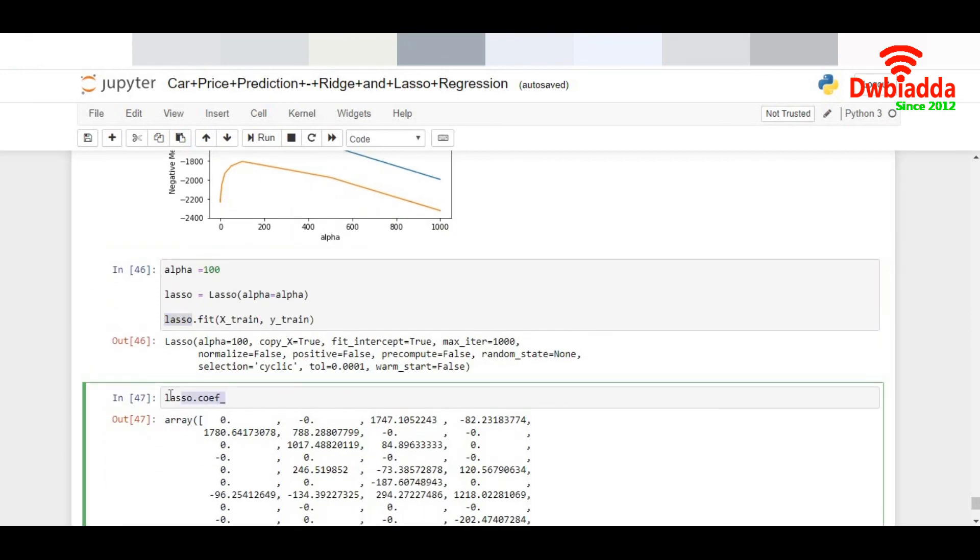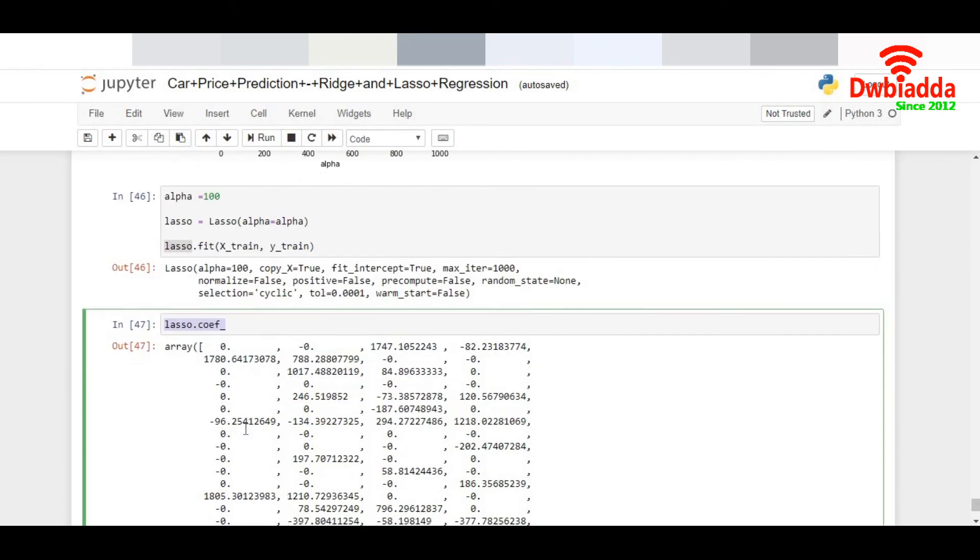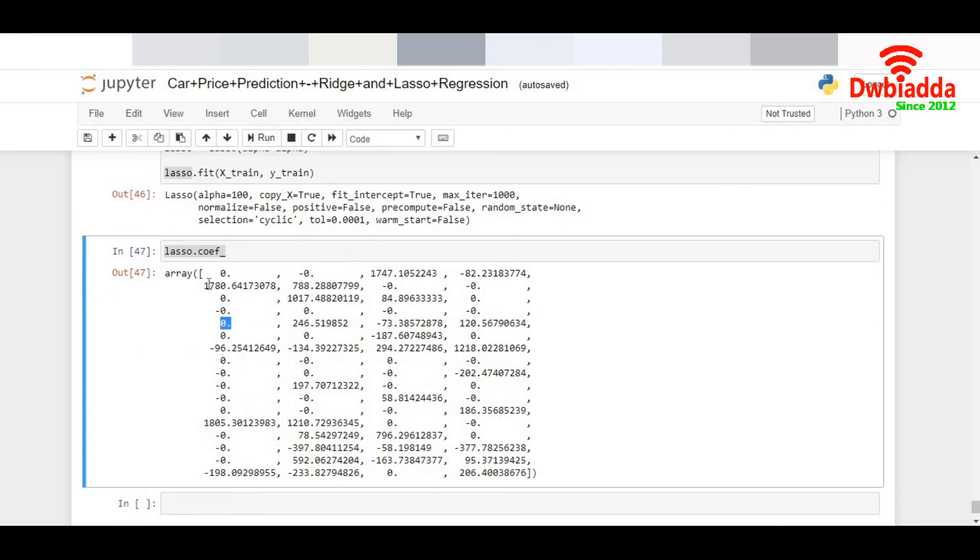I see the coefficients. Now if you notice over here, many of the coefficients have become 0, which means it has actually dropped these columns. It doesn't want these columns. The reason being, it feels these are not important columns. They don't drive the value, the predictor variable, which is the price over here for me. So it has just made them 0 and has a coefficient value which is considered pretty much higher than what we had in ridge regression. So that was about ridge and lasso regression. Thank you very much.